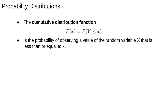Related to the idea of a probability density function is the idea of a cumulative distribution function. The equation is read as: F(x) is the probability of observing a value of the random variable that is less than or equal to x. This function F(x) is the cumulative distribution function, and the mathematical notation is much easier to use than saying that mouthful.